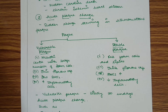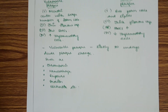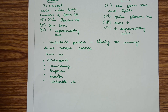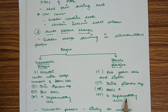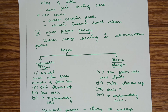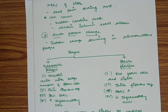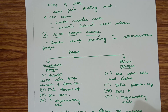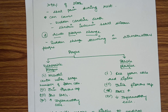Acute plaque change is a sudden change in an atheromatous plaque, which may be ulceration, rupture, thrombosis, hemorrhage, or other complications. This is generally seen in vulnerable plaques. Plaques may be stable or unstable (vulnerable). Stable plaques have a thick fibrous cap, more smooth muscle cells, fewer foam cells and lipids, and fewer inflammatory cells. Vulnerable plaques have a thin fibrous cap, a large necrotic core with many foam cells, fewer smooth muscle cells, and more inflammatory cells — making them easy to rupture.